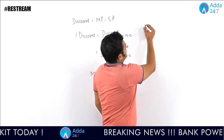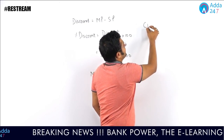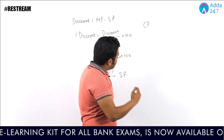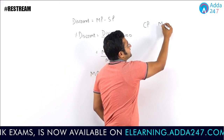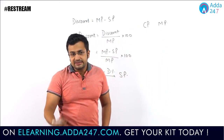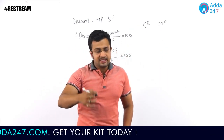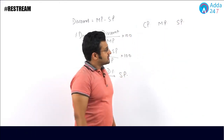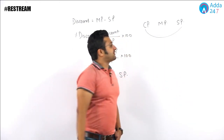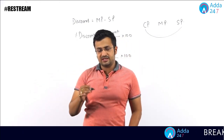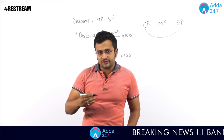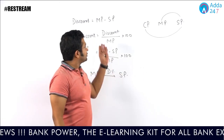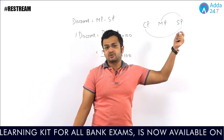From the shopkeeper's point of view: first, the cost price comes — he purchases an article. Then he marks it above the cost price with some MRP or mark price. Then he gives some discount and sells it at the selling price. The difference between CP and SP is profit or loss, and the difference between mark price and selling price is called discount.